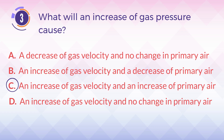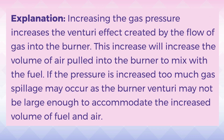The answer is C: an increase of gas velocity and an increase of primary air. Increasing the gas pressure increases the venturi effect created by the flow of gas into the burner. This increase will increase the volume of air pulled into the burner to mix with the fuel. If the pressure is increased too much, gas spillage may occur as the burner venturi may not be large enough to accommodate the increased volume of fuel and air.